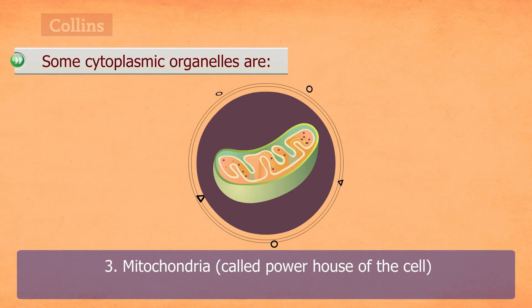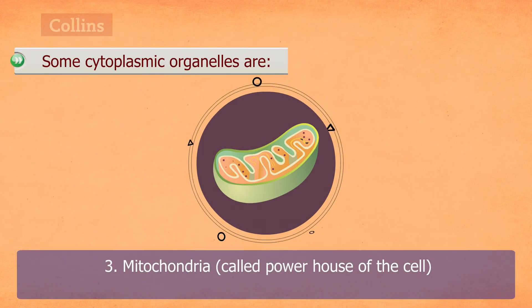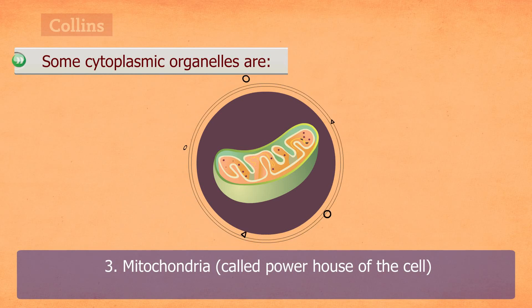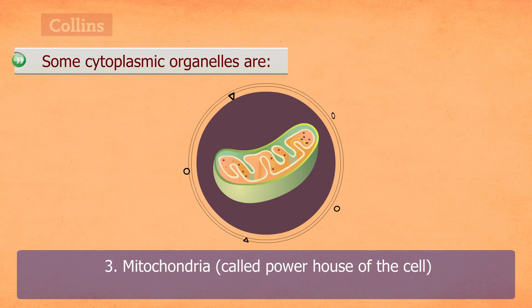Mitochondria. These are small rod-like or spherical structures. They oxidize food to provide energy and are therefore called the powerhouse of the cell.